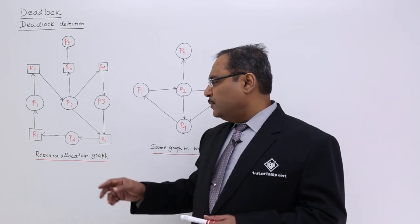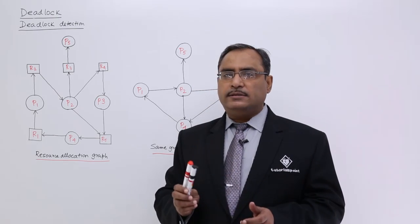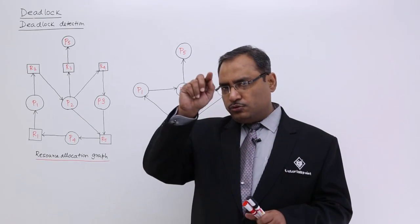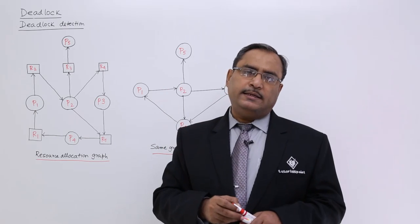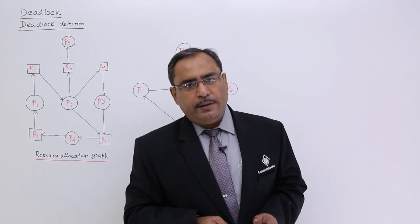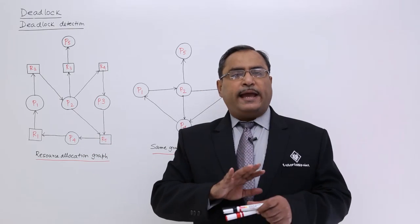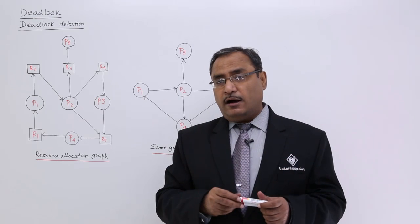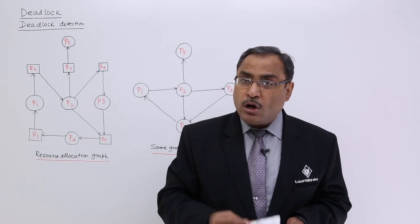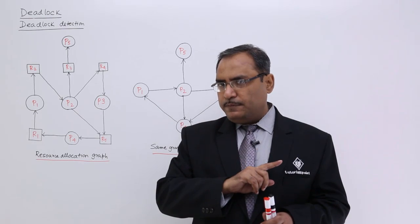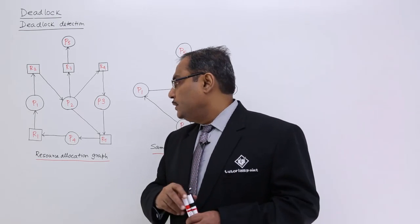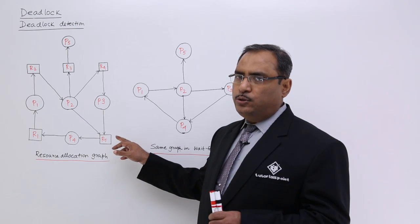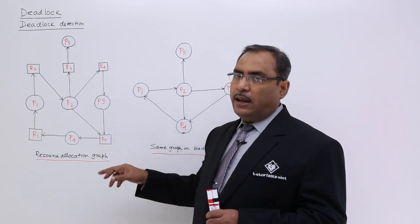In the resource allocation graph, if there is no cycle — a cycle meaning a closed path following the directed edges — then deadlock will not occur. But if the resource allocation graph has a cycle, then deadlock may or may not occur. So I cannot ensure that deadlock is going to take place just because a cycle exists in the resource allocation graph.